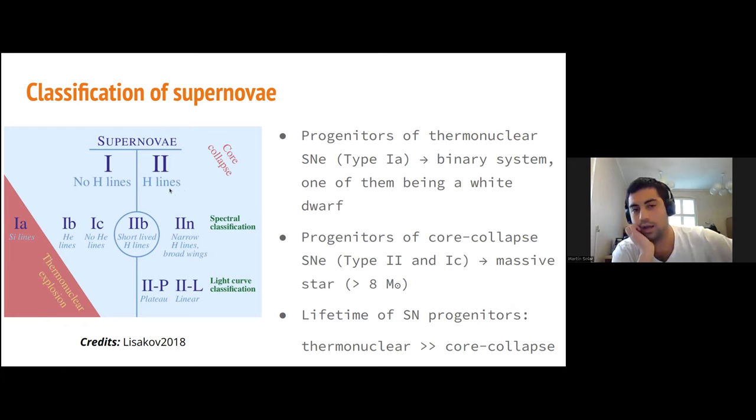And also Type Ic, which shows no helium lines and no hydrogen lines in the spectra. Why is it not possible to observe helium or hydrogen lines? Because they were removed either by a companion stripping the outer layers or by strong stellar winds if the star is very massive.